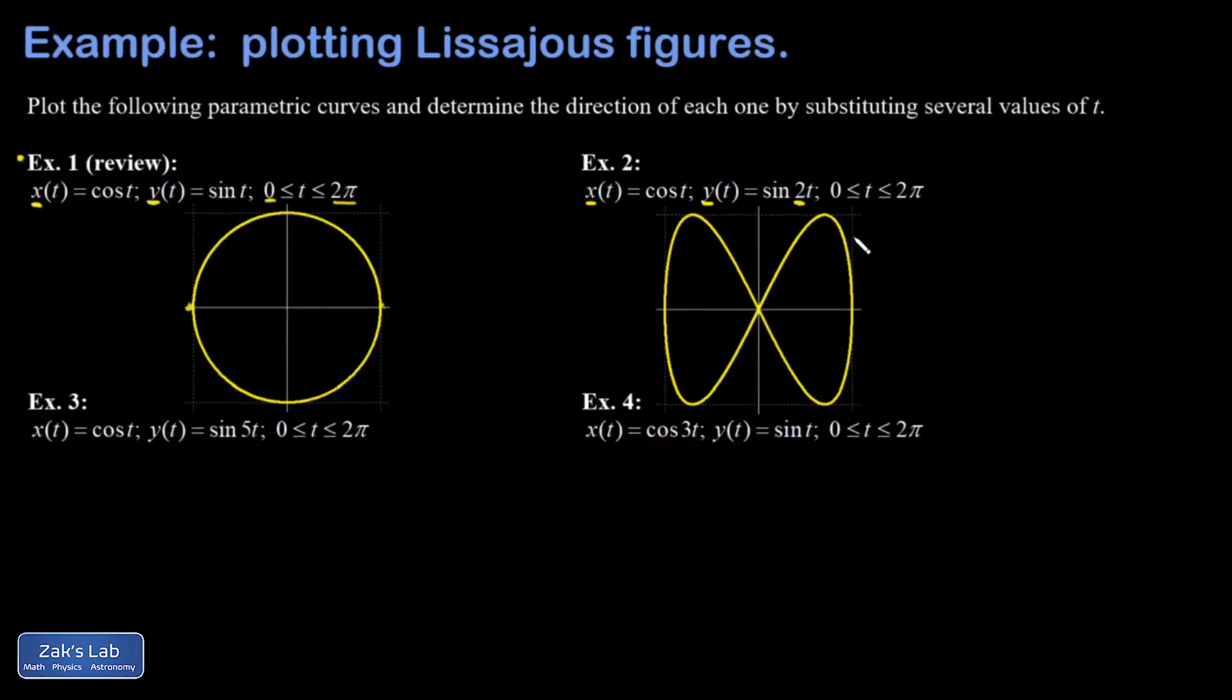We're asked to substitute in a couple values of t to determine the directionality. If I plug in t equals 0, x is going to be 1, cosine of 0. And y is going to be 0, the sine of 0. So I start here.